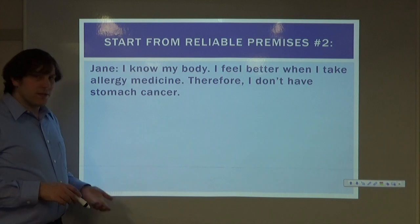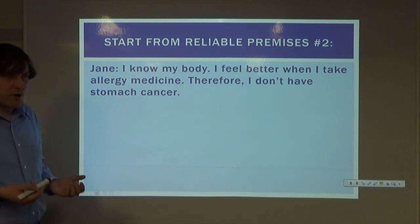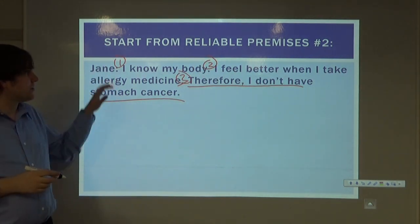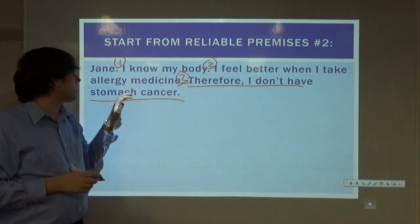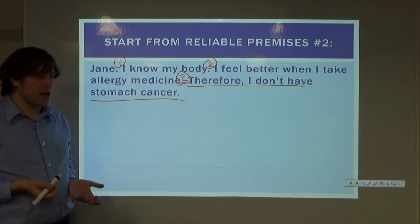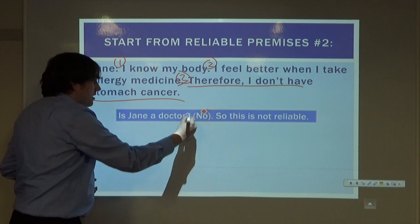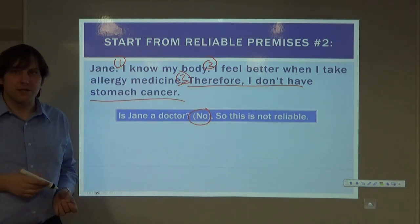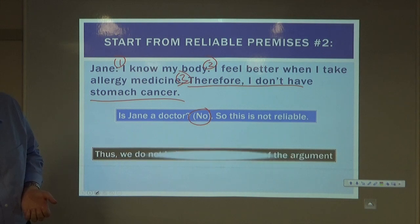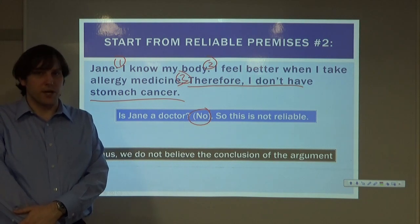Second example. Jane says: 'I know my body. I feel better when I take allergy medicine. Therefore, I don't have stomach cancer.' The conclusion is 'I don't have stomach cancer.' The premises are 'I know my body' and 'I feel better when I take allergy medicine.' The first question to ask is: is Jane a doctor? No. She's not reliable for talking about her own body's medical state. You need a physician to know if someone has cancer. So we do not believe the conclusion of this argument.